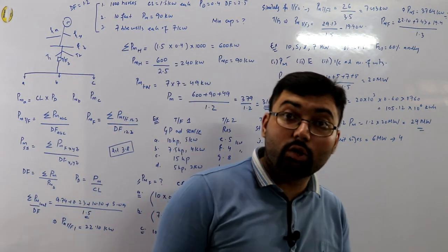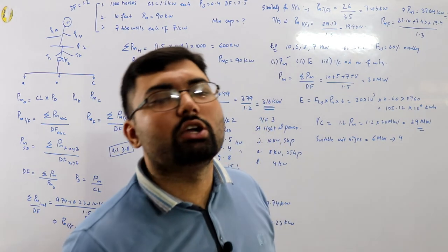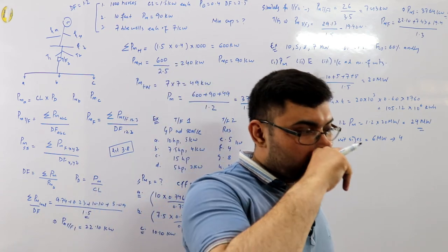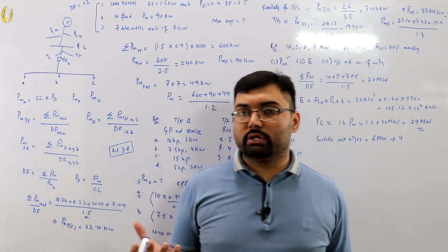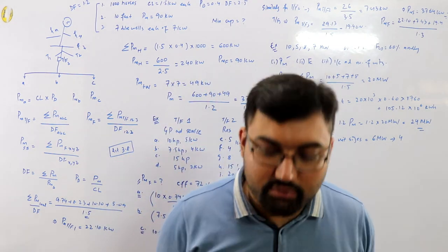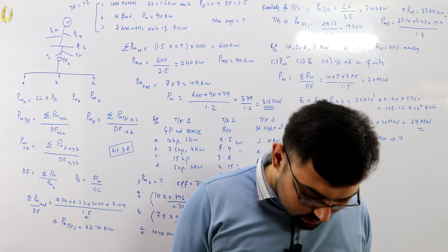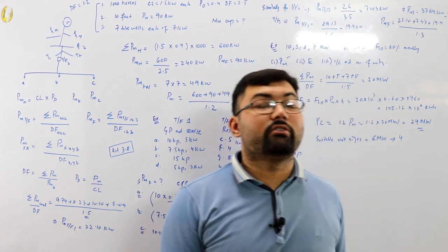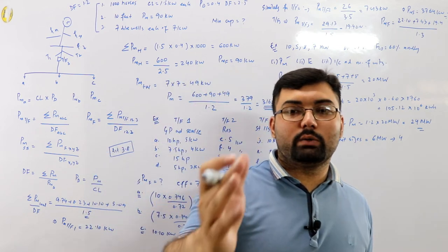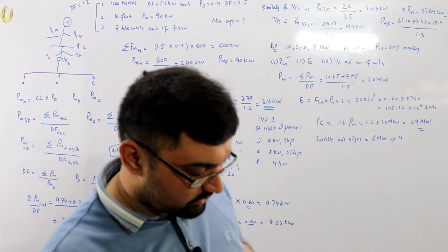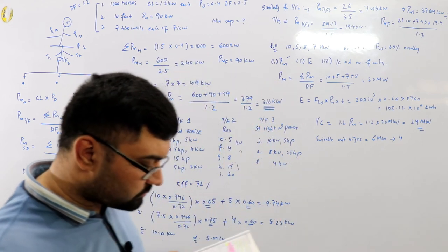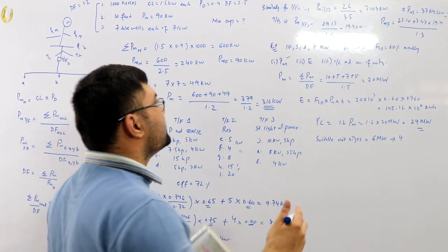A single generating unit would not operate efficiently across a varying load curve, since a machine operates efficiently at about 75–80% of rated power. Multiple smaller units are more practical. Example 3.18 is left as homework — you are given a load curve with time and power values, from which you calculate energy units.